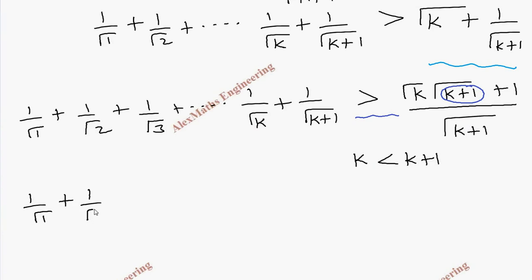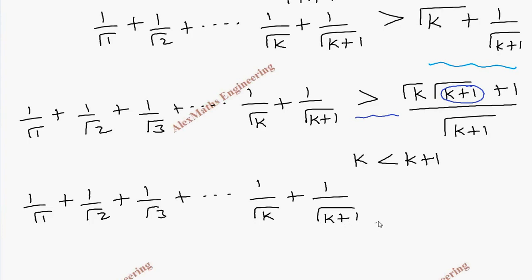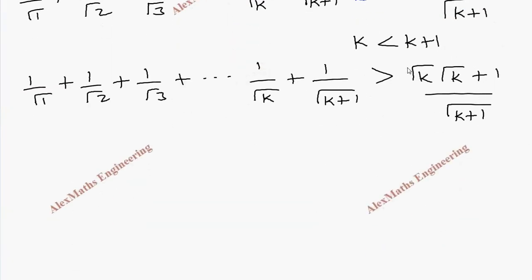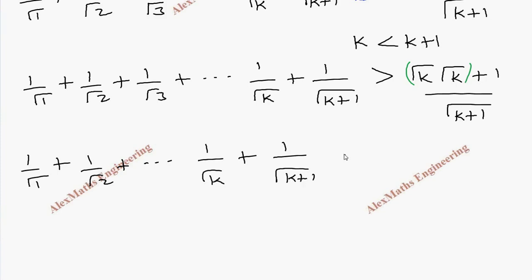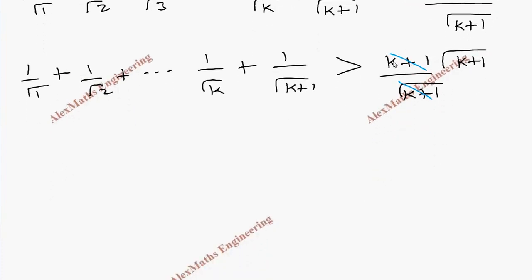After the replacement, the RHS becomes: √k·√k + 1 over √(k+1), where the product √k·√k becomes k. So the numerator is k+1 over √(k+1). Canceling, k+1 = √(k+1)·√(k+1), so after cancellation one factor of √(k+1) remains.